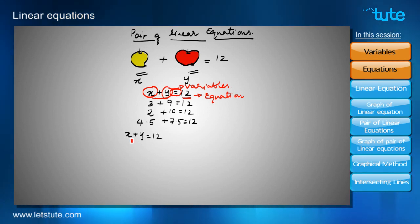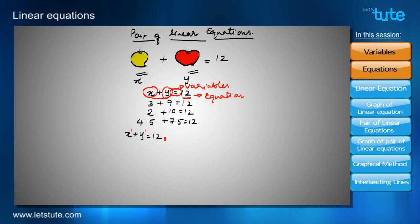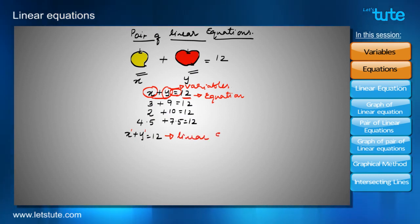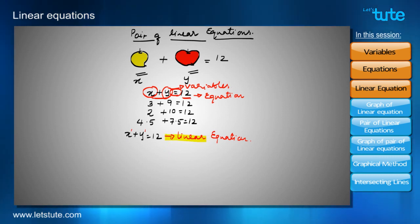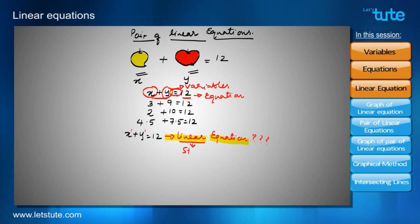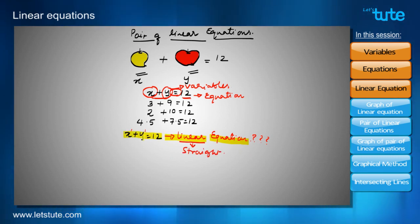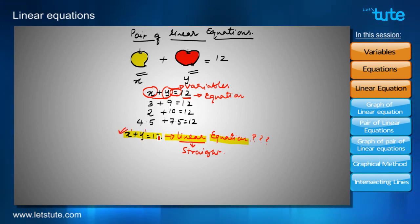Now we have the equation x plus y equals 12. We can see there is nothing in the power, meaning the power is 1. When the powers of the variables in an equation are 1, that equation is called a linear equation. The word 'linear' means straight — such equations give straight lines when graphed.